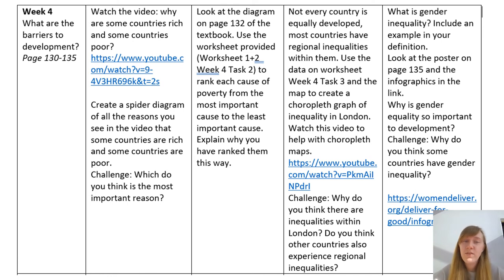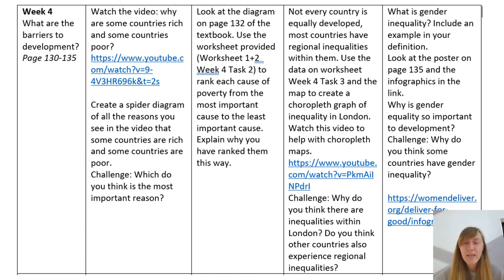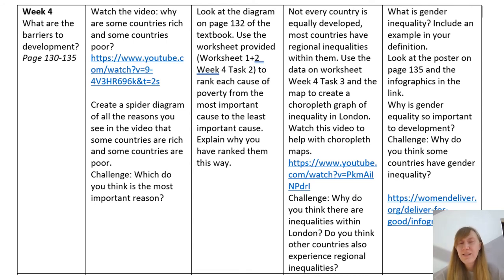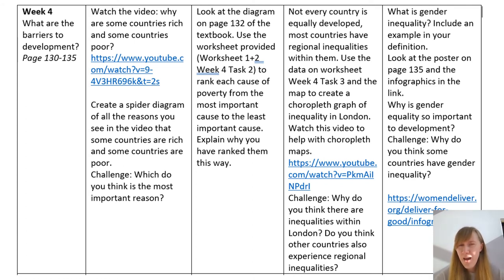On the screen you can see our tasks for the week. Task one is similar to what we've done today but with a different video — you're going to watch a video on why some countries are rich and some poor, and create a spider diagram of the reasons. You might want to extend the spider diagram you started today. Then pick one reason you think is the most important reason some countries aren't developing and explain why. When you write your answer, don't just write down the label — for example, don't just write 'political'; explain why it's a barrier, linking it to war or corrupt governments not investing in the right place.